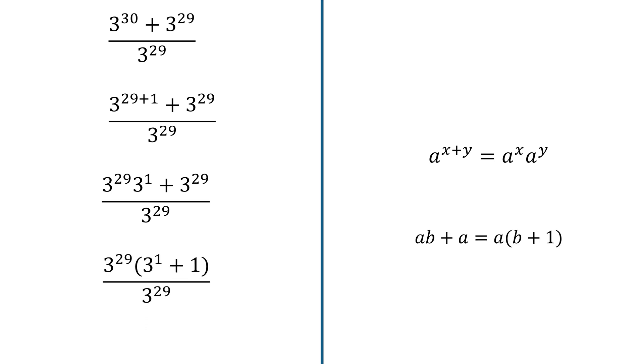If I have a b plus a, I can factor a out and have a into brackets b plus 1. In the same way, I can factor 3 exponent 29 out and have 3 exponent 1 plus 1 in the brackets.